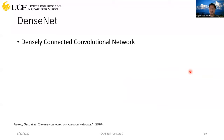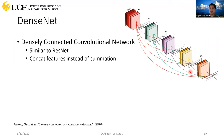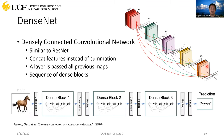DenseNet, from 2016, is similar to ResNet with skip connections, but takes it further: features extracted in early layers might be useful for all later layers, not just the next one. So whatever features are extracted at one layer are passed to all future layers. You can see these connections in the architecture — within one dense block, each layer's output feeds into all subsequent layers. You then have a sequence of these dense blocks forming the DenseNet architecture.